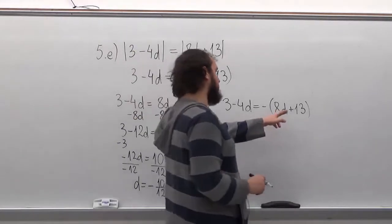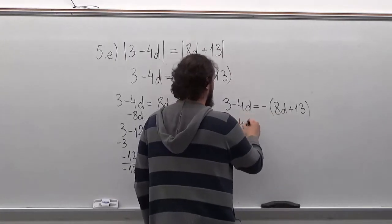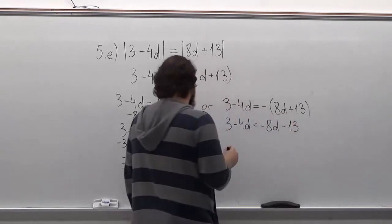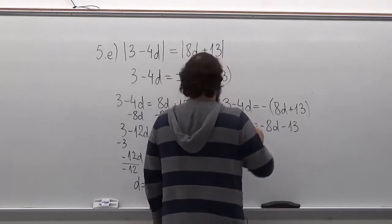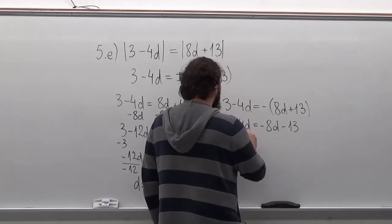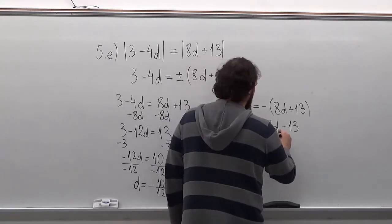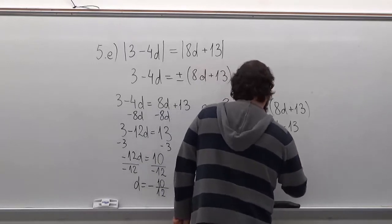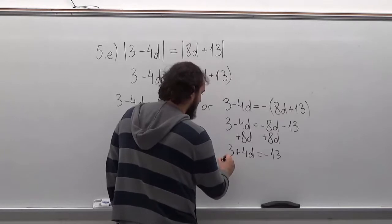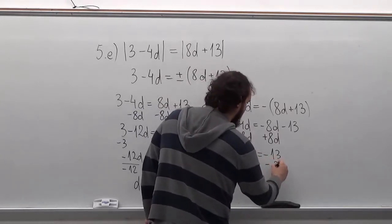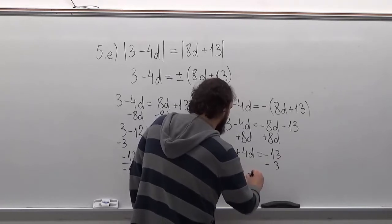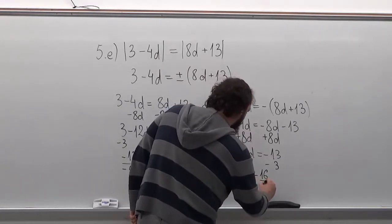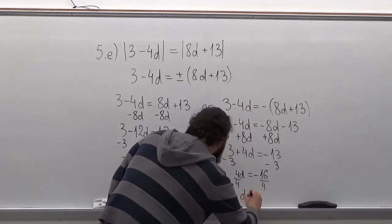Now for this side, the first thing we want to do is open up the parenthesis. Then we do pretty much the same thing — first we add 8D to both sides. We'll have 3 plus 4D equals minus 13. Now we'll subtract 3 from both sides. We'll have 4D equals minus 16. And now we'll divide both sides by 4. We'll have D equals minus 4.